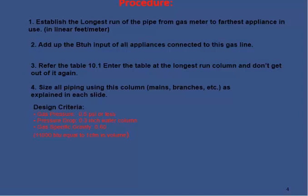Third, refer to table 10.1 as shown here and enter the table at the longest run column and don't get out of it. If we re-read this, we have to establish the total longest distance from meter to the farthest point for calculating the friction losses. Next, we have to size the pipes using the columns as shown in table 10.1.